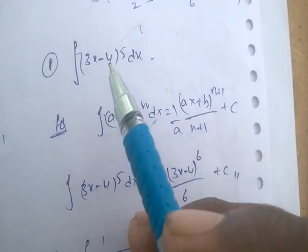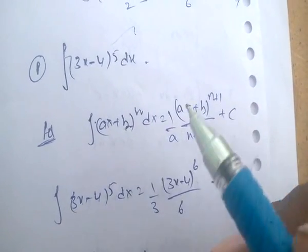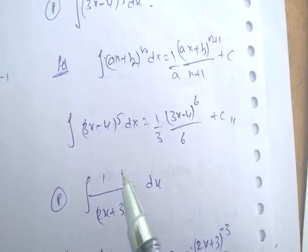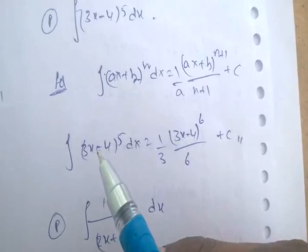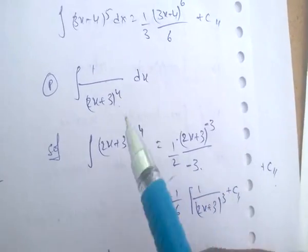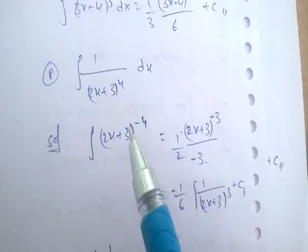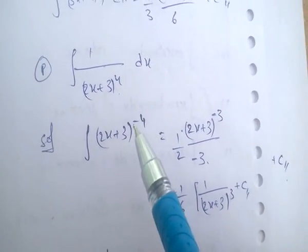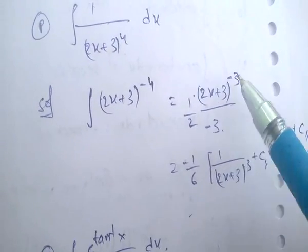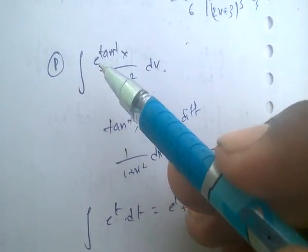For integral of (3x minus 4)^5 dx: use the formula integral of (ax+b)^n dx equals (1/a) · (ax+b)^(n+1)/(n+1). So here it is (1/3) · (3x−4)^6 / 6. Similarly, numerator and denominator swap when the power is negative: (2x+3)^(−4+1) / (−4+1) gives (2x+3)^(−3) / (−3).